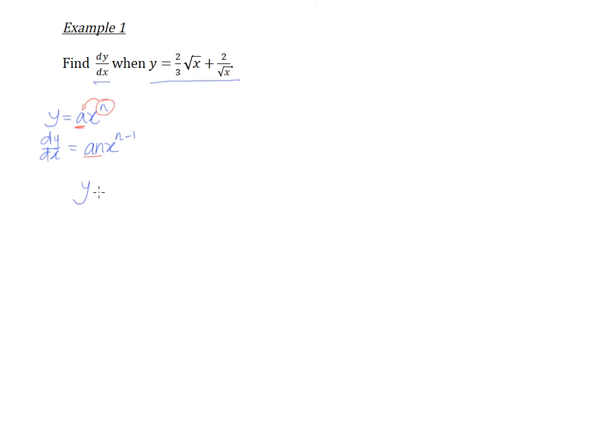First of all, the first step is not to differentiate anything yet, but is to change our radical form, and that is our root form, into index form. And that means changing the square root of x into x to the power of half, and this being 2 over square root of x is actually the same as 2 with x to the power of negative half.